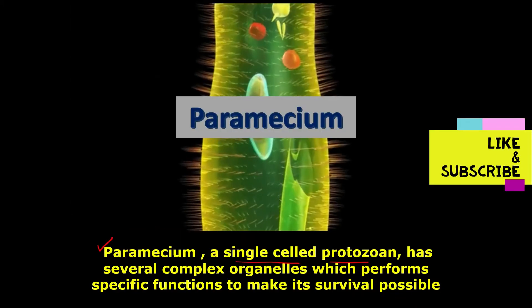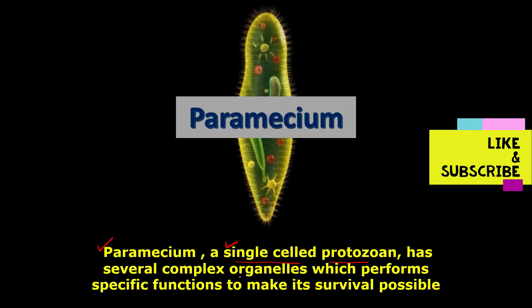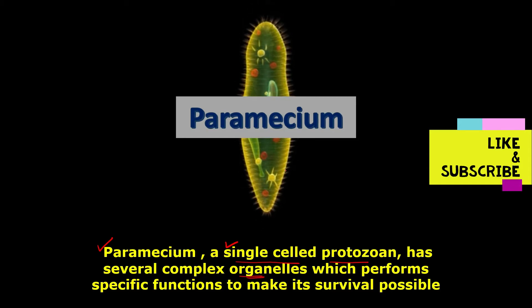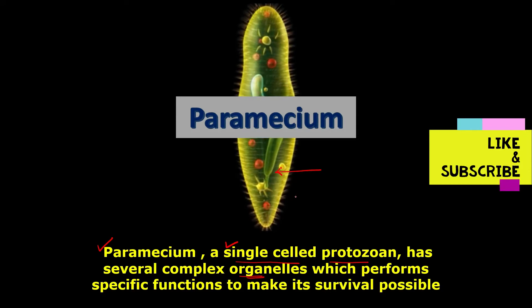Another example of a unicellular organism is paramecium. Paramecium is a single-celled protozoan which has several complex organelles that perform all the functions required for this organism to survive. Paramecium is a ciliated unicellular organism — the cilia present on its body help in locomotion as well as dragging food to its oral cavity, capturing prey through the process of phagocytosis.